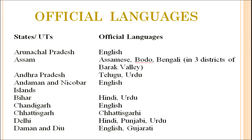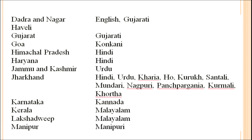Official languages vary by state. Arunachal Pradesh has English; Assam has Assamese, Bodo, and Bengali; Andhra Pradesh has Telugu and Urdu; Andaman and Nicobar has English; Bihar has Hindi and Urdu; Chandigarh has English; Chhattisgarh has Chhattisgarhi; Delhi has Hindi, Punjabi, and Urdu; Daman and Diu and Dadra and Nagar Haveli have English and Gujarati; Gujarat has Gujarati; Goa has Konkani; Himachal Pradesh has Hindi; Haryana has Hindi; Jammu and Kashmir has Urdu; Jharkhand has Hindi, Urdu, Kharia, Ho, Kudukh, Santali, Mundari, Nagpuri, Panchparganiya, Kurmali, and Khortha — and recently Bengali and Odia are to be included.